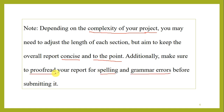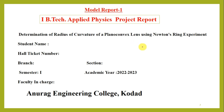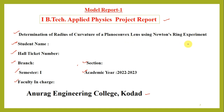Now we will see some model reports. On the title page, we have to keep: Applied Physics Project Report, then student name, hall ticket number, branch, section, semester, academic year, faculty in charge, college name and location. The title of the project: 'Determination of Radius of Curvature of Plano-Convex Lens using Newton's Ring Experiment.' We have to calculate the radius of curvature of a plano-convex lens using Newton's ring experiment.